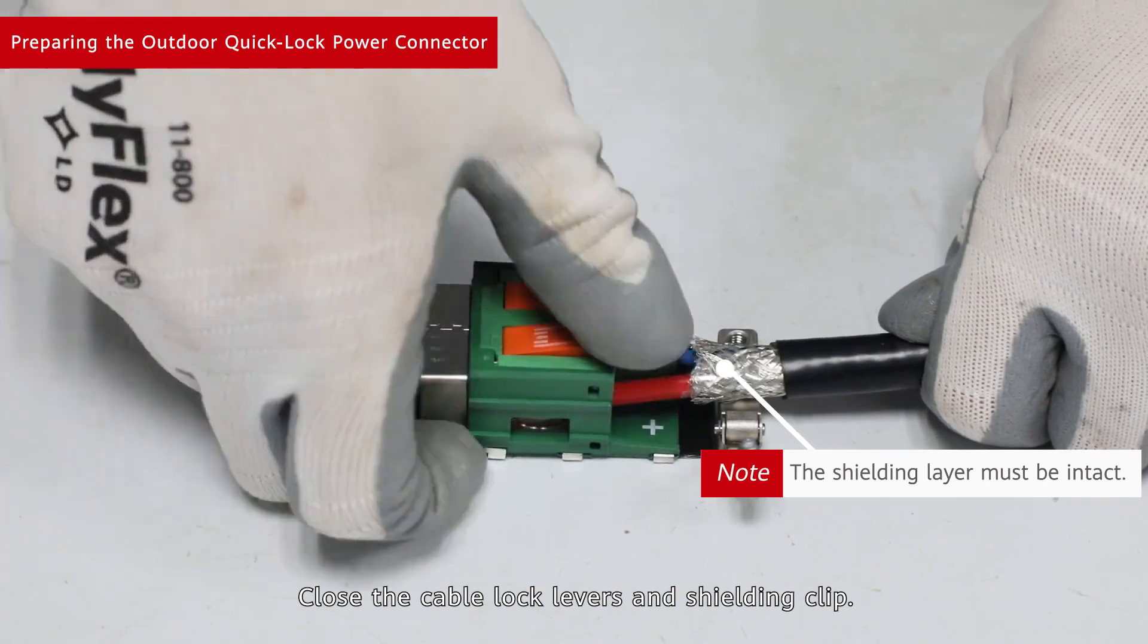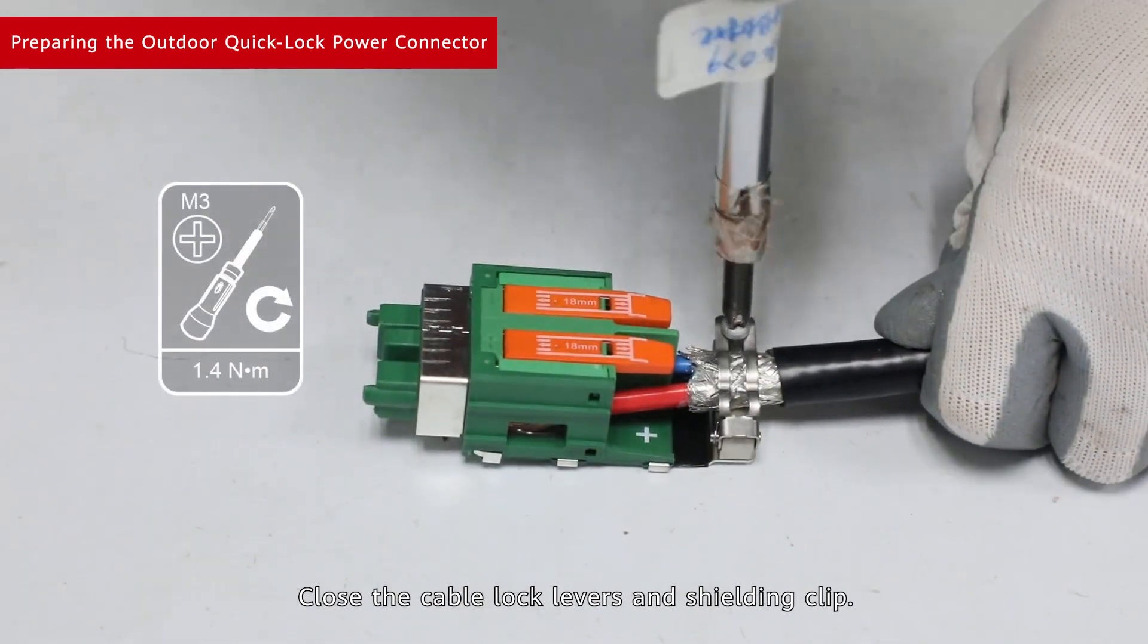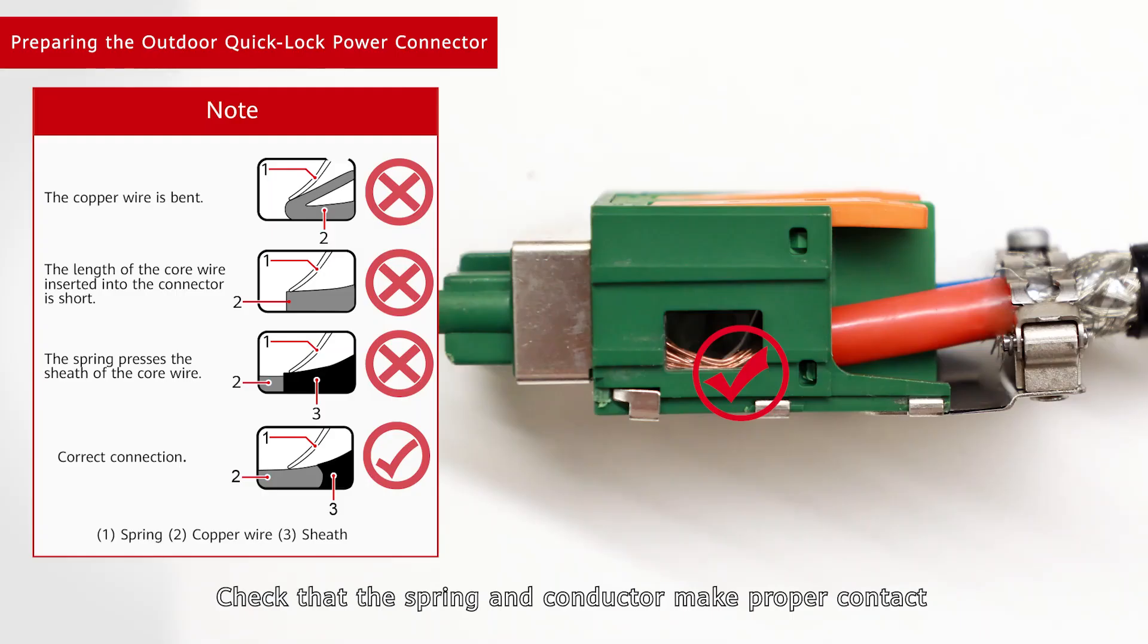Close the cable lock levers and shielding clip. Check that the spring and conductor make proper contact through the openings on the side of the inner part.